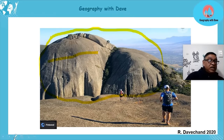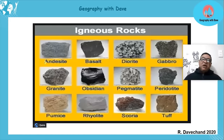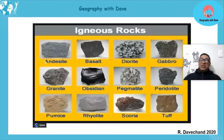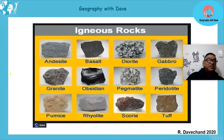Here are some examples of igneous rocks — you don't need to go into detail about these, but out of interest you may be able to identify them when you see them: basalt, diorite, gabbro, granite. You're not a geologist, so just some examples to show you. It's interesting looking at rocks — I have my own little rock collection.